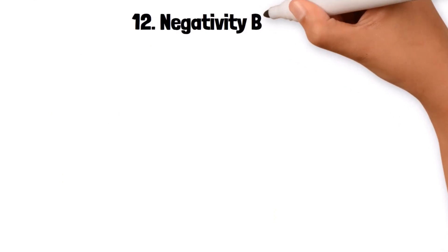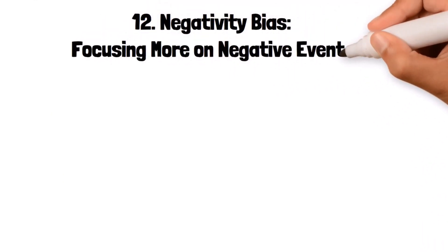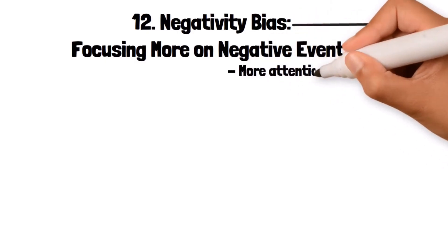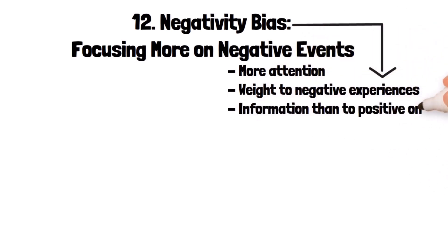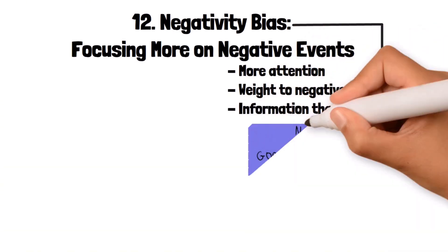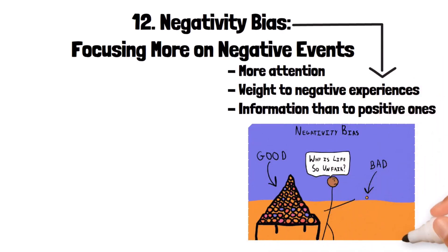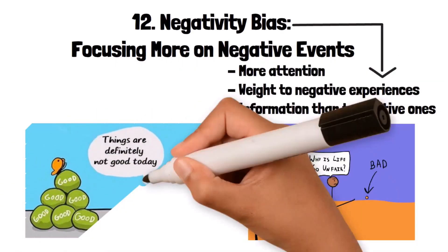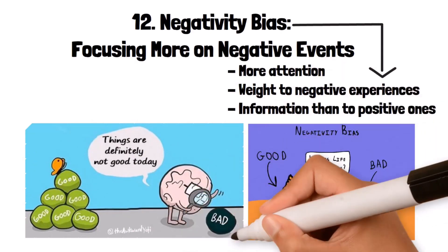12. Negativity Bias: focusing more on negative events. Negativity bias is the tendency to give more attention and weight to negative experiences or information than to positive ones. This bias can lead to an overly pessimistic view of the world or a situation. For example, people might remember a single piece of negative feedback more vividly than multiple positive comments, leading them to believe their performance was worse than it actually was.